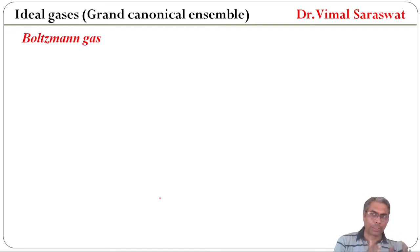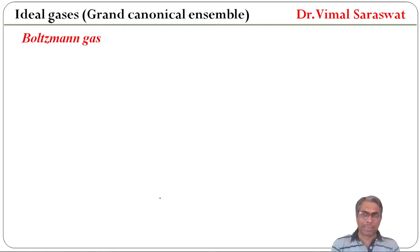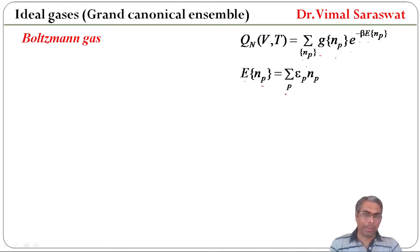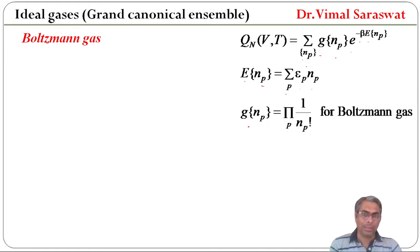Now, grand canonical ensemble for Boltzmann gas. The partition function QN equals sigma over {np} of g(np) times e raised to minus beta times E(np). For Boltzmann gas, g(np) equals the product over p of 1 upon factorial np, and E(np) equals sigma over p of ep times np.